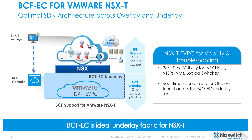Big Cloud Fabric Enterprise Cloud is an ideal underlay fabric for NSX-T as it enables you to have an optimal SDN architecture across overlay and underlay. Big Cloud Fabric not only allows you to create an eVPC in the underlay dedicated to your NSX deployment, but also provides real-time visibility for network admins into NSX hosts, VTEPs, VMs, and logical switches. Real-time fabric trace for Geneve tunnels across the Big Cloud Fabric underlay also makes troubleshooting easy.